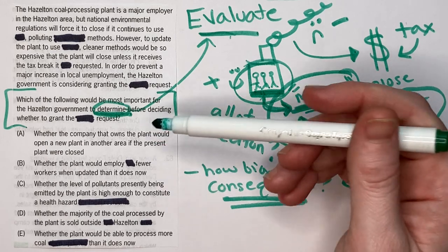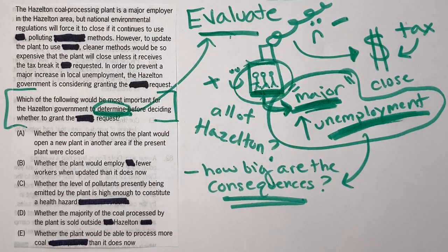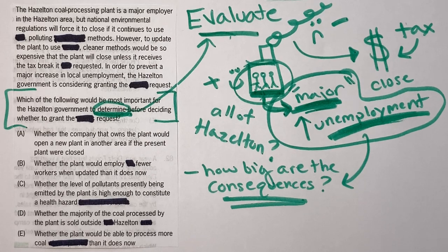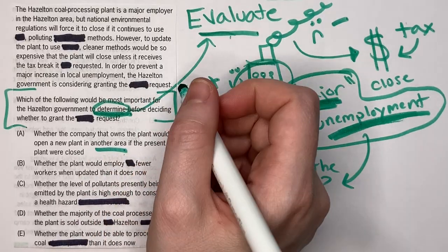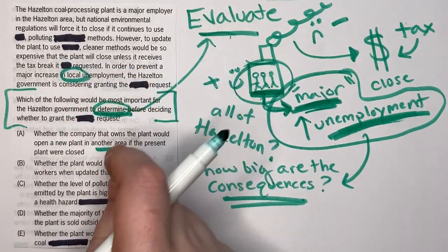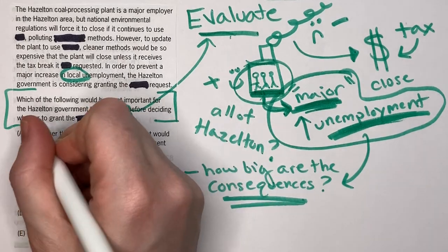Answer choice A asks whether the company that owns the plant would open a new plant in another area if the present plant were closed. The problem is it talks about 'another area,' but the conclusion specifically talks about local unemployment — so that is out of scope.